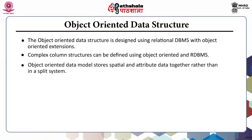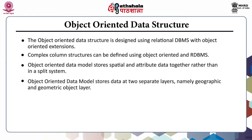Object-oriented data model stores spatial and attribute data together rather than in a split system. This model also allows spatial features to be associated with properties and methods, where a property is an attribute or characteristic of an object and a method is a specific action that can be performed on an object. Object-oriented data model stores data at two separate layers, namely the geographic and geometric object layer.